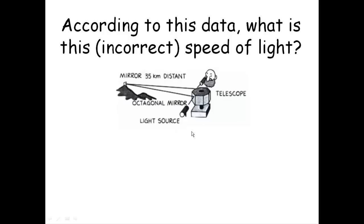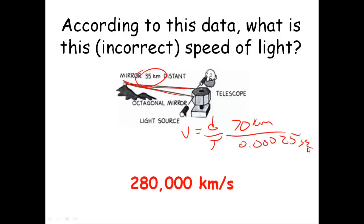So according to this, we just do a velocity equals distance over time. Then the distance was, of course, twice that 35 or 70 kilometers, divided by the time that we got, 0.00025 seconds, and we get 280,000 kilometers per second. Now, I intentionally did not put the correct numbers in. They are correct for the math we did, but I intentionally did not get the correct speed of light.